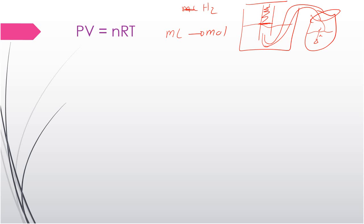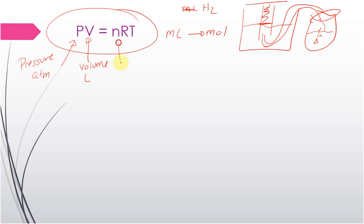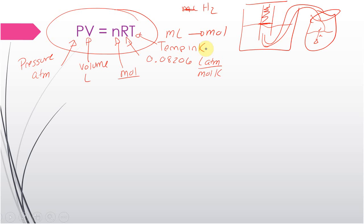We can't do anything with milliliters of H2 directly — all our coefficients are in moles — so we have to convert from milliliters to moles. We'll use the ideal gas law: PV = nRT. P is pressure in atmospheres, V is volume in liters, n is moles, R is the constant 0.08206 liter·atmospheres per mole·Kelvin, and T is temperature in Kelvin. You'll find the temperature at your lab station or on the thermometer on the front counter; pressure is on the barometer and your instructor will tell you; and you'll need to convert your volume from milliliters to liters.